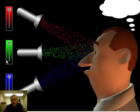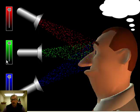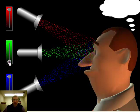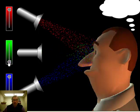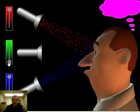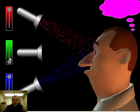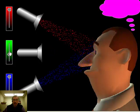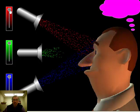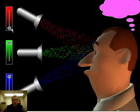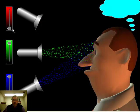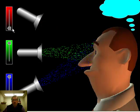If I take out the green, the person sees violet. If I put the green back in and take out the red, this person is going to see a cyan color, which is sort of the opposite of red.